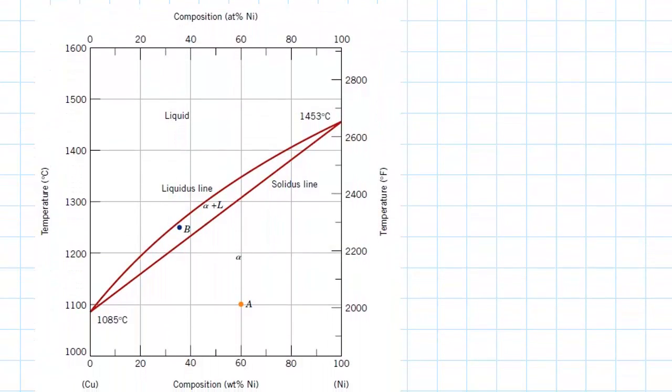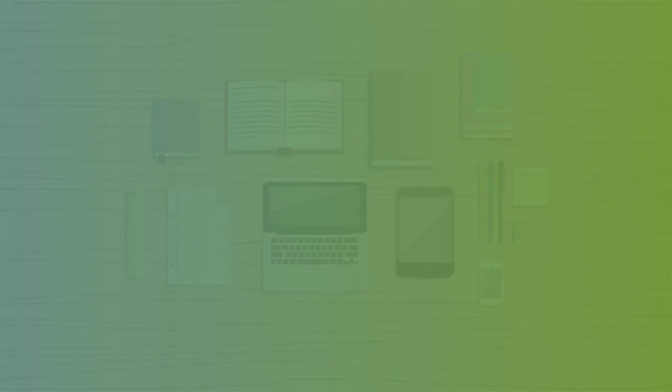So let's have a look at this diagram then. So firstly, something to notice here, in this case it is isomorphous because each single phase, so the liquid and the solid phase, which is represented by that alpha, moves...